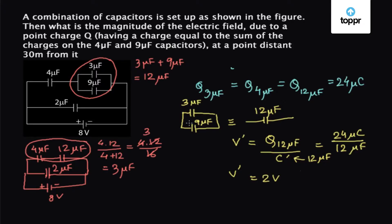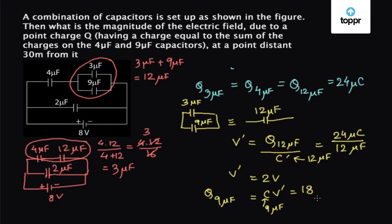Now we know the voltage across the 9 microfarad capacitor, which is the same as the 12 microfarad capacitor — that is 2 volts. So the charge on the 9 microfarad capacitor is equal to C into V dash, where C is 9 microfarad and V dash is 2 volts, so the charge on the 9 microfarad capacitor is 18 microcoulombs.